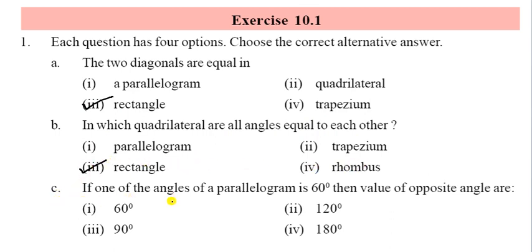If one angle of a parallelogram is 60 degrees, then the value of the opposite angle is also 60 degrees, because opposite angles are always equal in a parallelogram.